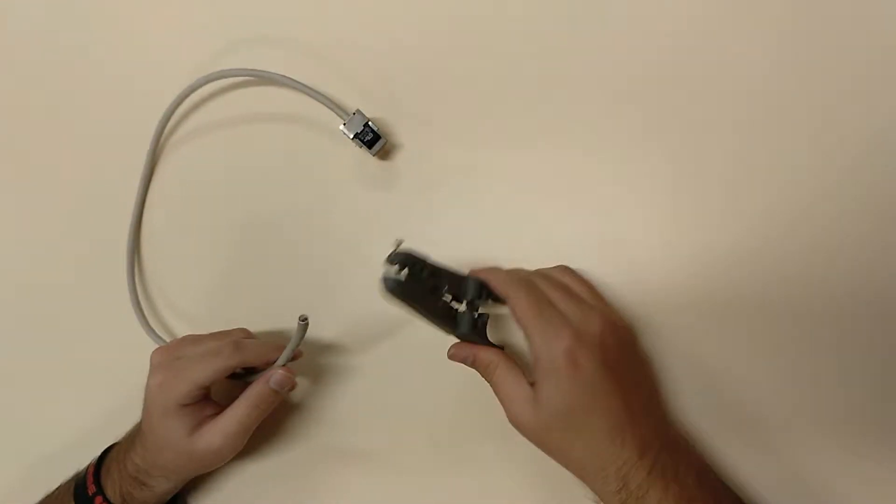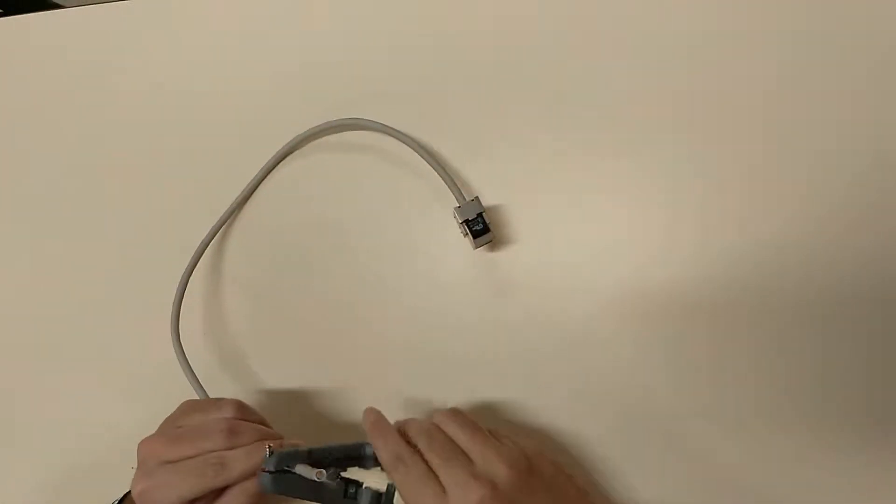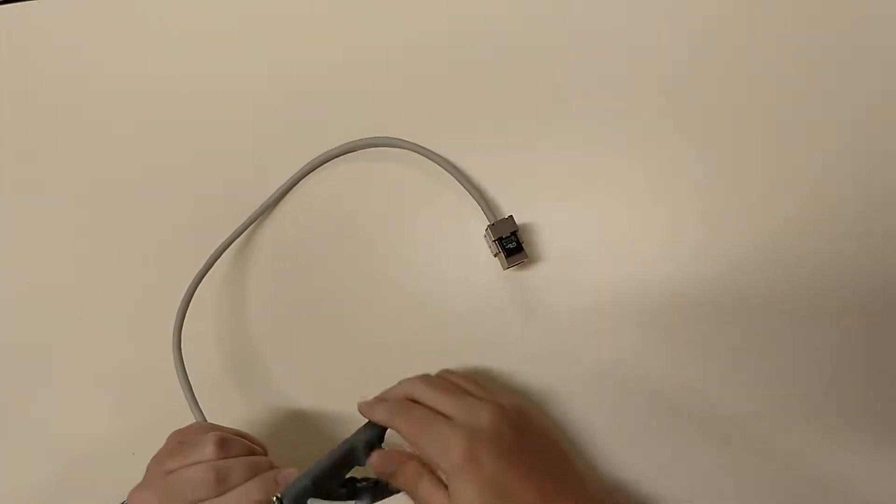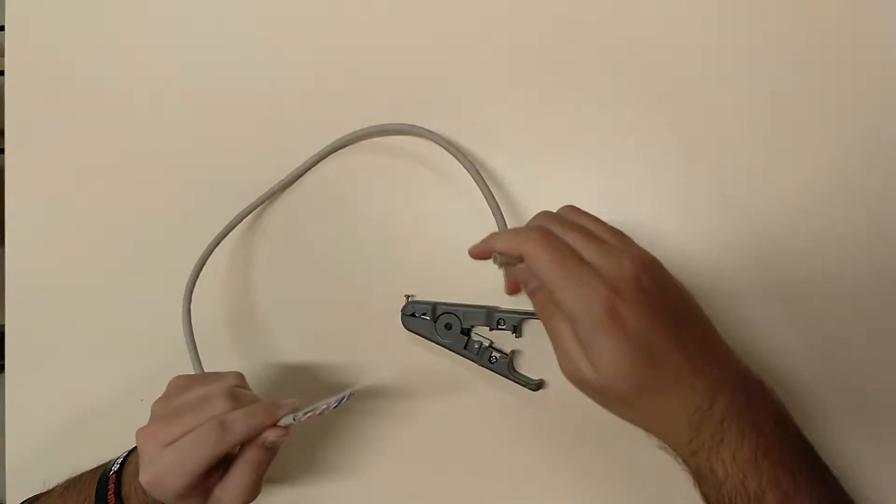First we take our network cable with the already assembled wall jack and peel the other end of the cable. We will make one or two turns without damaging the pairs of the interior. Then we untwist the pairs a little.